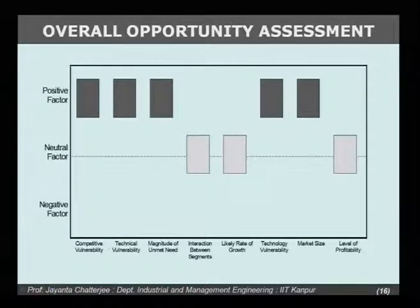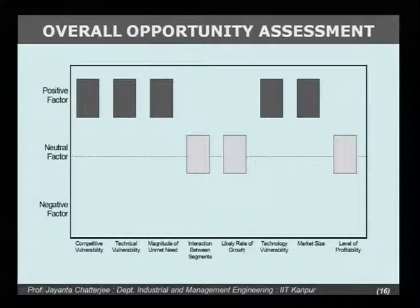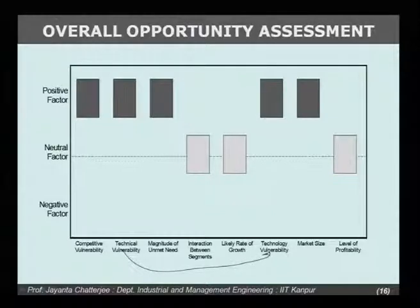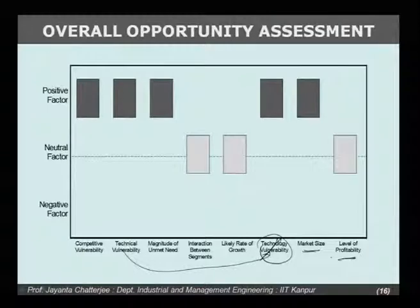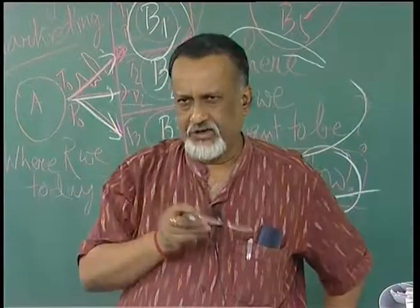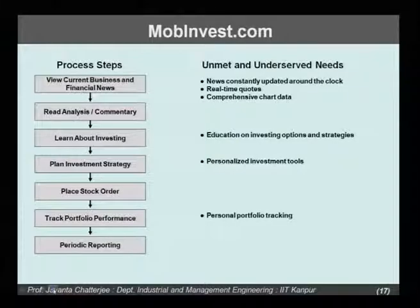You can also summarize and apply these to a diagram to compare different alternatives. Criteria include: competitive vulnerability, technical vulnerability, magnitude of unmet need, interaction between segments, likely rate of growth, market size, and level of profitability. Based on that you can analyze each one of the opportunities — B1, B2, B3 — and apply this to a case, which we will now illustrate with a sort of imaginary case.